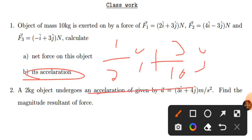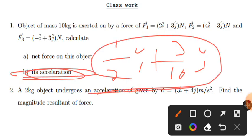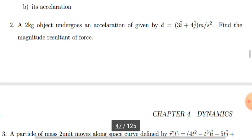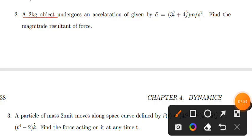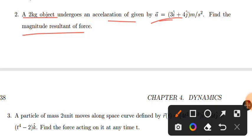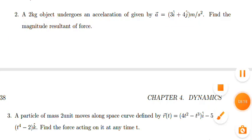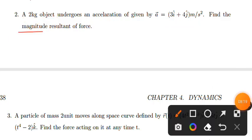Now for the next problem: a low-object undergoes an acceleration given by a = 3i + 4j meters per second squared. Find the magnitude of the resultant force. Force equals mass times acceleration.